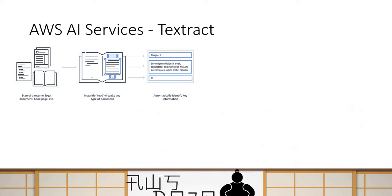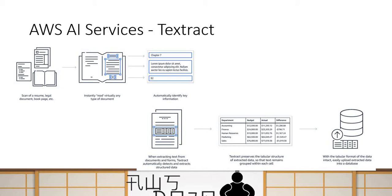Similar to form analysis, Textract can also do table analysis. You can provide table source data and it can analyze the table data and present it in a format you can consume for reporting or automation purposes. The key message is that it's not just about scanning text — it can do really smart analysis based on the format, giving you data you can consume and build automation on top of.